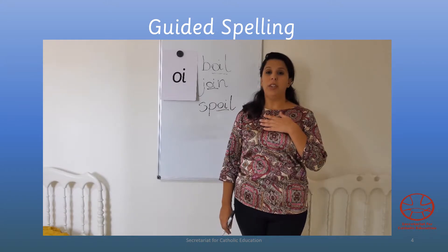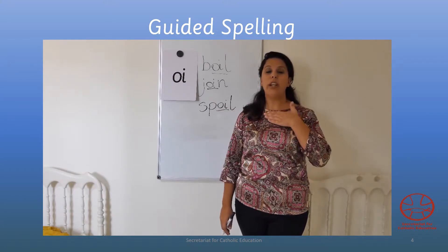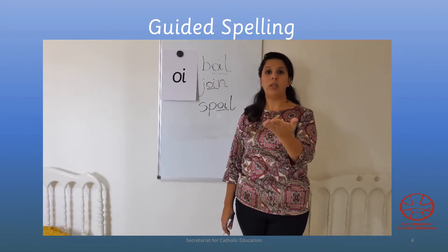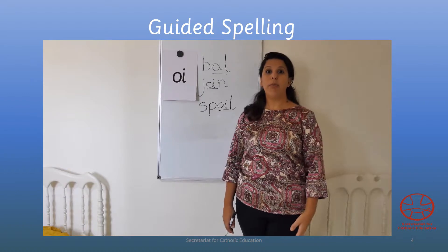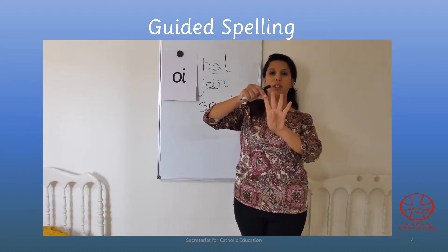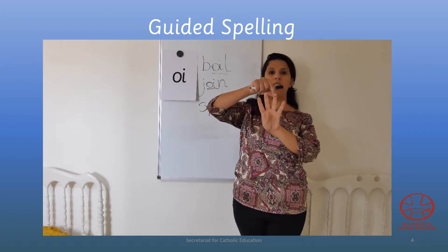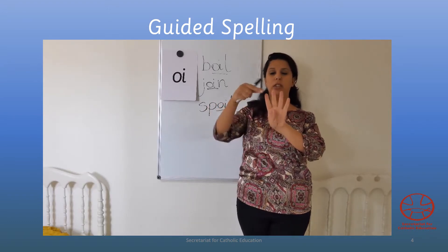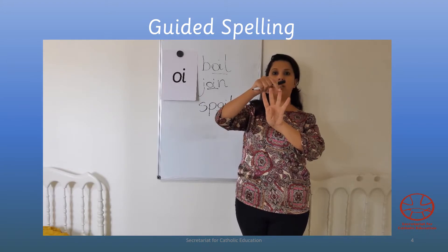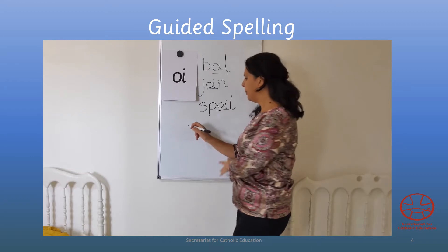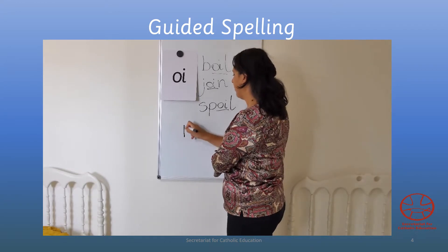And for our final word — our final word is 'point'. Point. Four sounds. Show me four fingers. Let's spell it on our fingers: P, oi, n, t. Point. Your turn. I'm going to write it: P, oi, n, t. Point. Your turn.